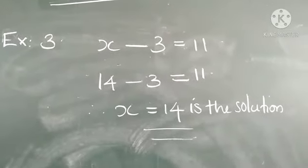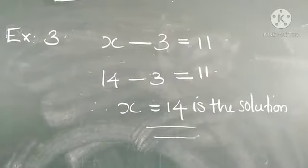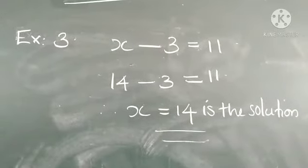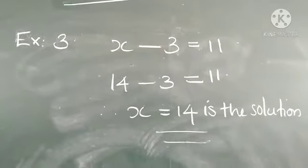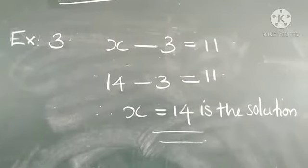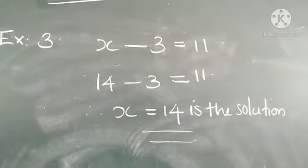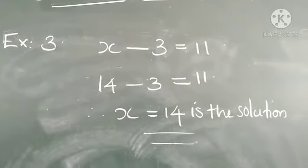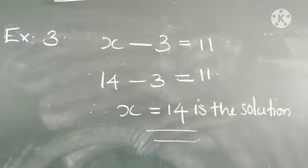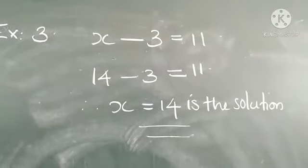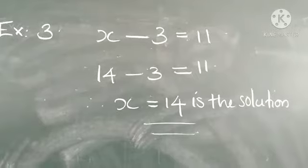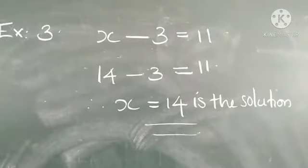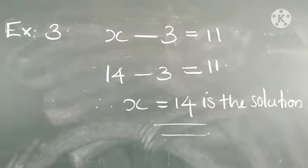Next example: x minus 3 equal to 11. So 14 minus 3 is 11. We write x equal to 14 is the solution. If we substitute 14 for x, we will get the solution. This equation is satisfied for the value x equal to 14, so x equal to 14 is the solution.